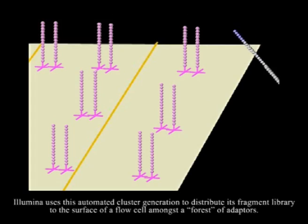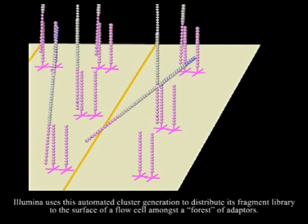Illumina uses automated cluster generation to distribute its fragment library to the surface of a flow cell amongst a forest of adapters.